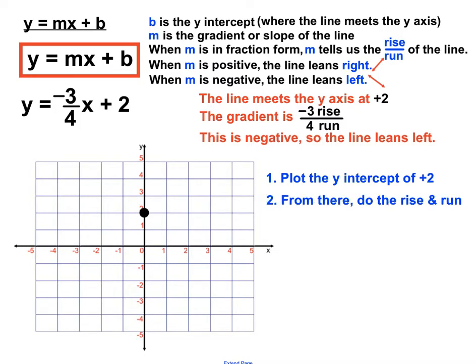From that y-intercept point, we'll do the rise and the run. Now it rises 3 for every 4 that goes across. This time I've gone to the left because I need to create a left-leaning line.